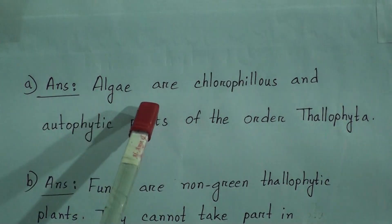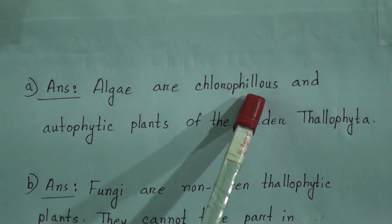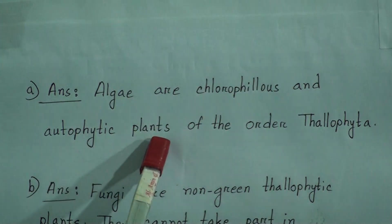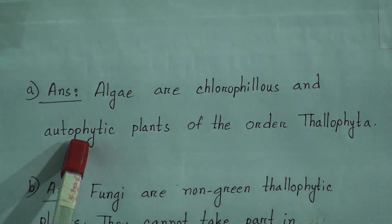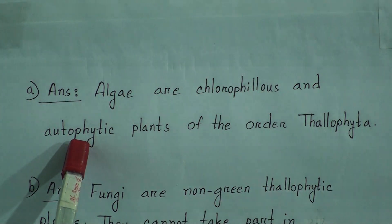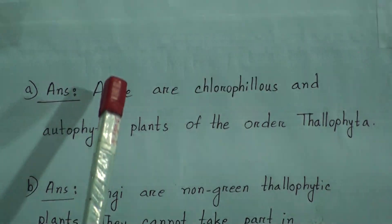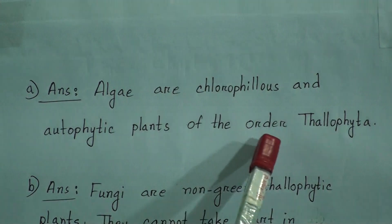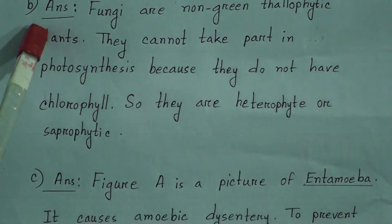Answer: algae are chlorophyllous and autophytic plants of the order Thallophyta. Autophytic means they can make their own food because they contain chlorophyll. So the answer is: algae are chlorophyllous and autophytic plants of the order Thallophyta. Now B number answer.